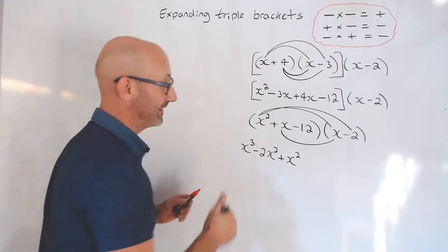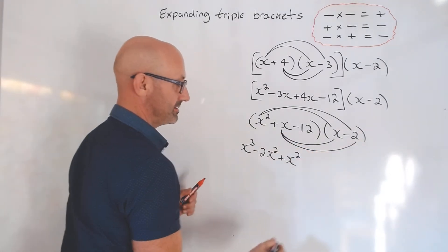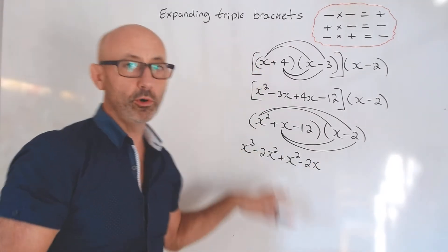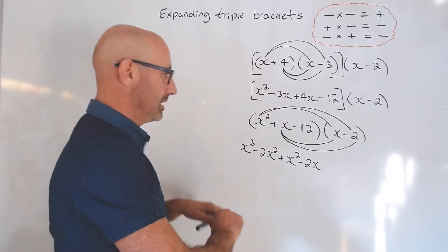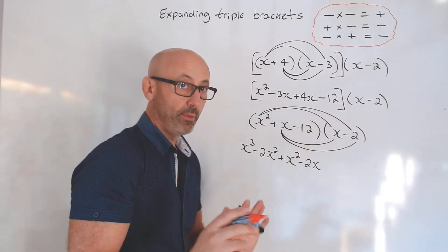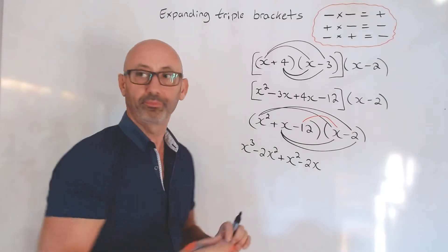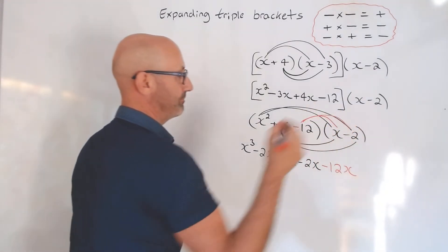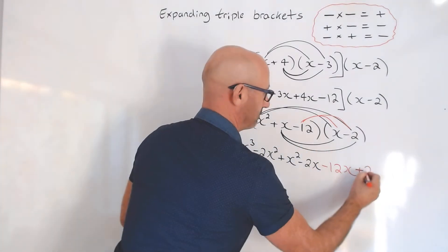What's that times that? Minus 2x. It's really important you give yourself plenty of room here so you don't make mistakes. Then finally, I like to use a different colored pen for this to make it stand out. What's that times that? Minus 12x. And that times that? Plus 24.